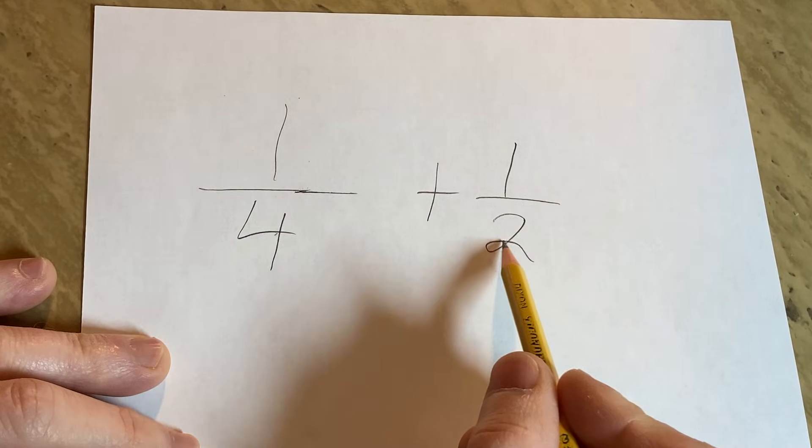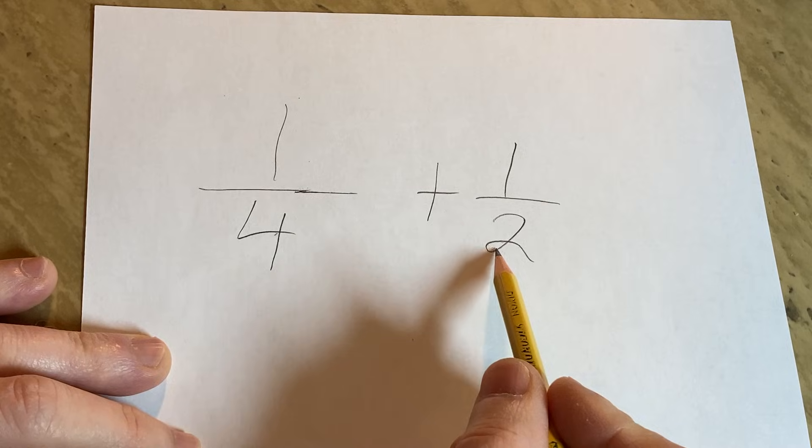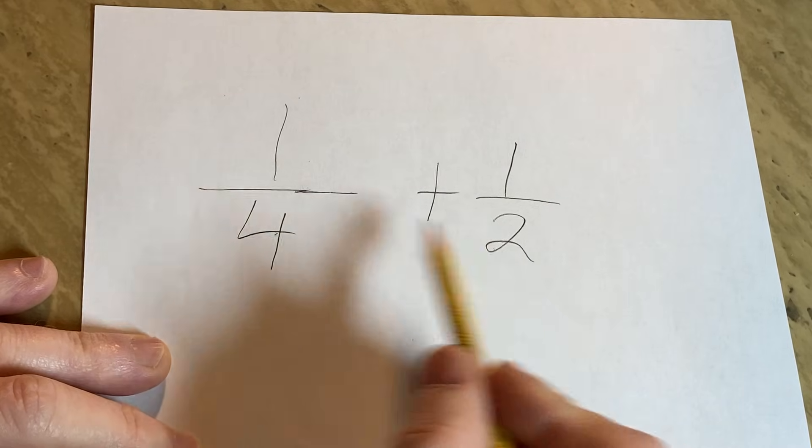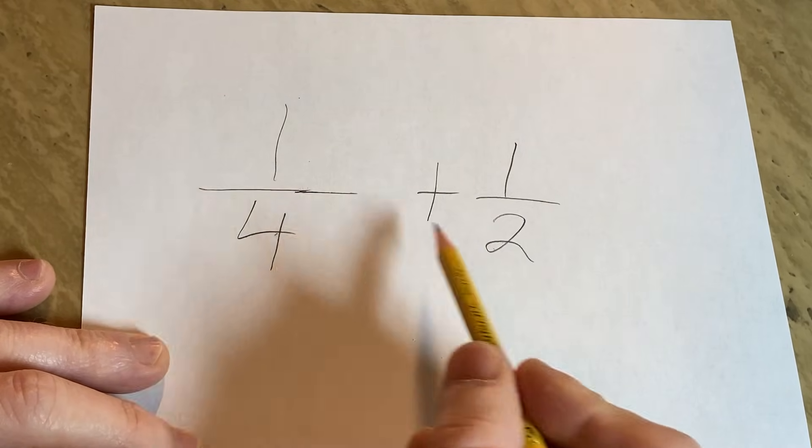So in this case, this is a 4 and this is a 2. So if we can make this a 4, then the denominators, the numbers on the bottom, will be the same.